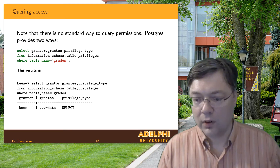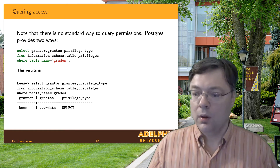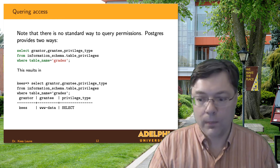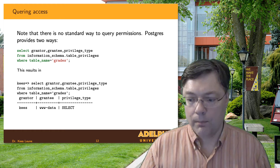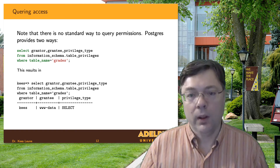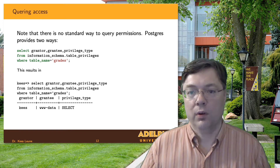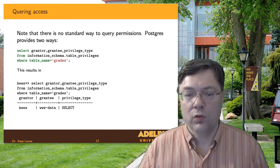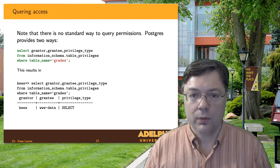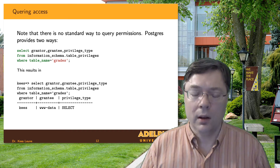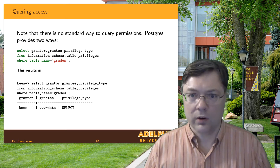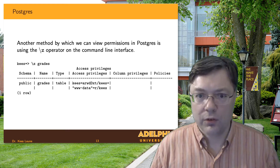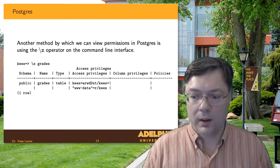For example: SELECT grantor, grantee, privilege_type FROM information_schema.table_privileges WHERE table_name = 'grades'. That might show that user www-data has SELECT rights on a particular table — www-data being the username the web server runs under. If I'm writing web applications that need to access my database, I need to grant specific access to that user. The principle of least privilege is one of the fundamental concepts in cybersecurity. In psql, you can also use the backslash-z command followed by the table name to see the access control list.